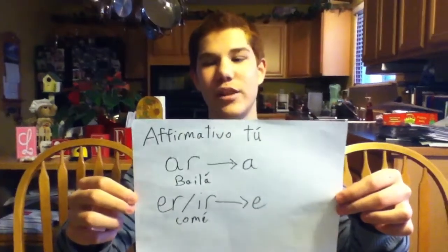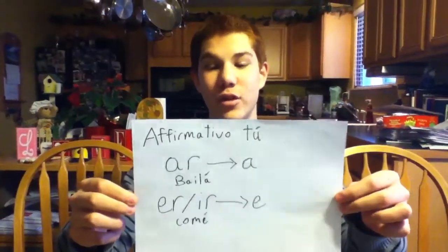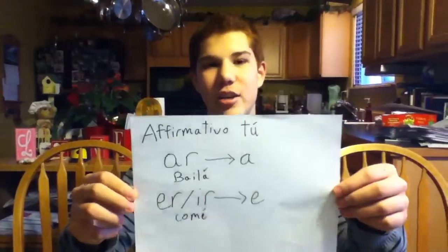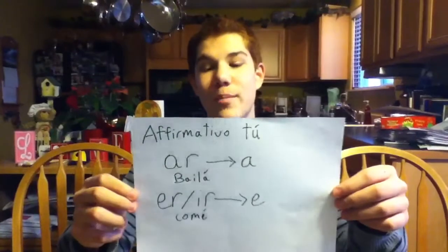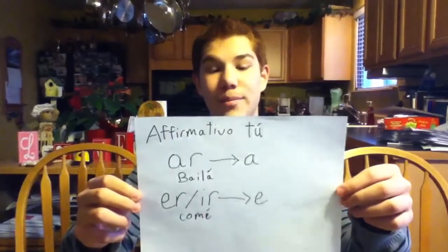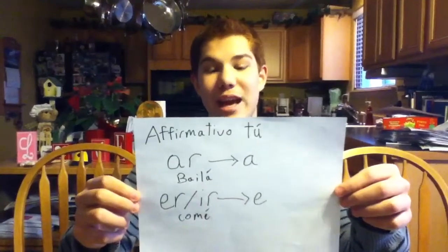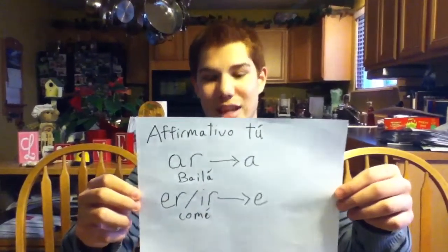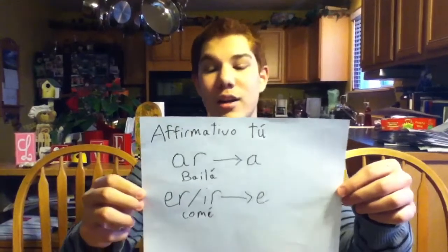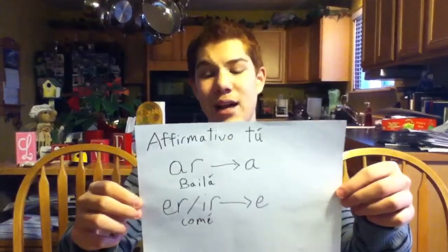To make a tú mandato in the affirmative form, conjugate the verb in the yo form. For an AR verb, drop the O and add an A. For example, for the verb bailar, it's baila.